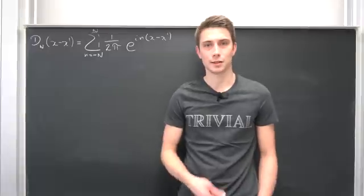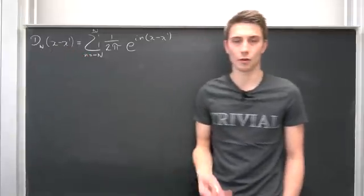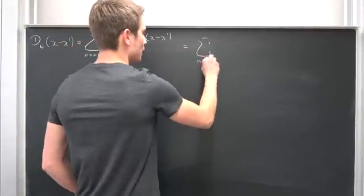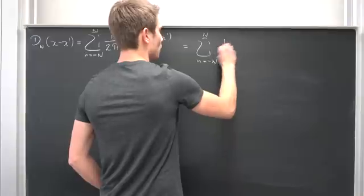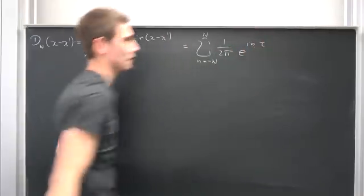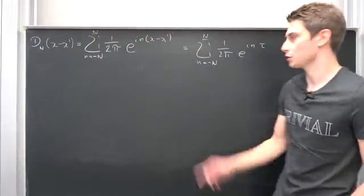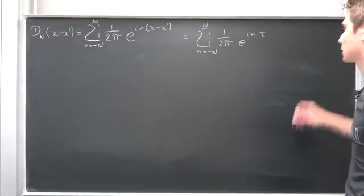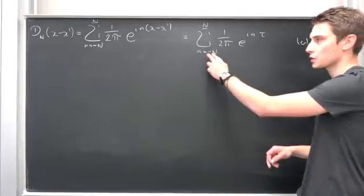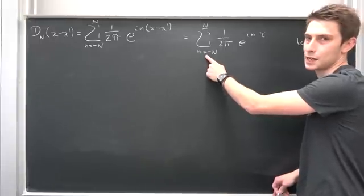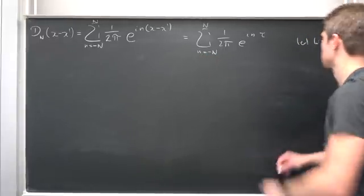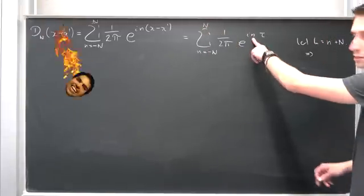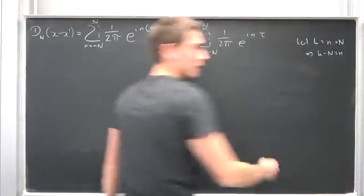We want to express this right here today in a slightly different manner. First, I would like to rewrite this difference of x values as tau — I really don't care what you call it, I'm just going to use tau because it's a cool letter. So we have n going from negative N to capital N, 1 over 2π, e to the i times n times tau. Now we want to shift the index. Let k equal n plus capital N, because if we add N on both sides we get n plus N equal to 0, so k runs from 0 to 2N, and small n is k minus capital N.